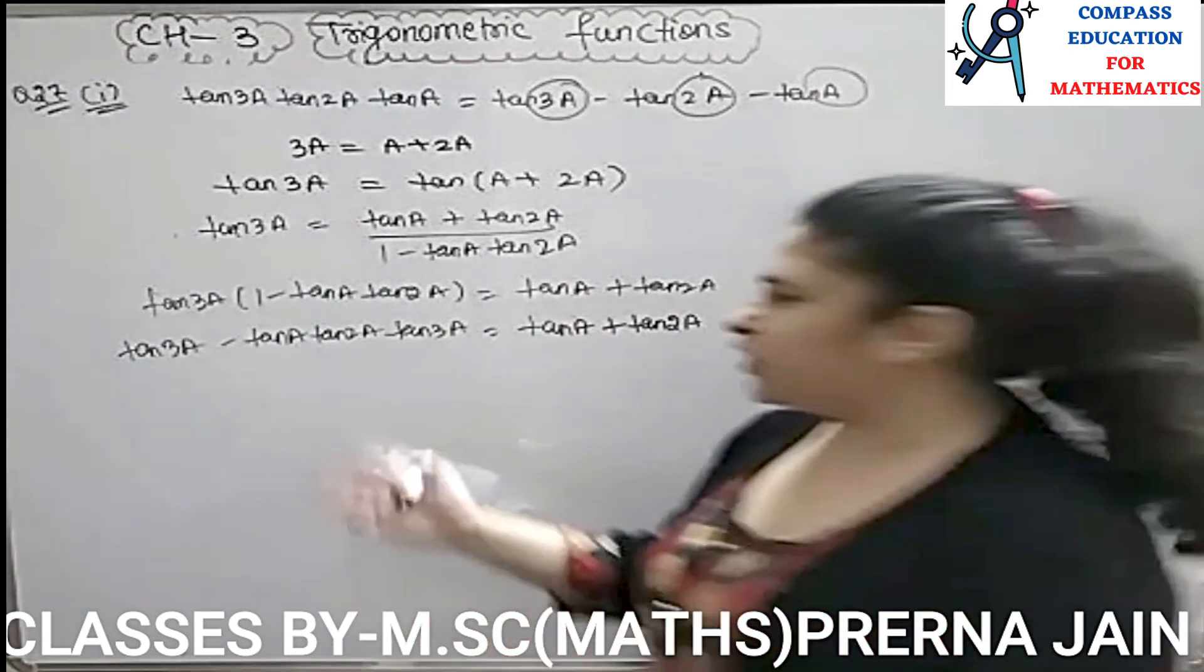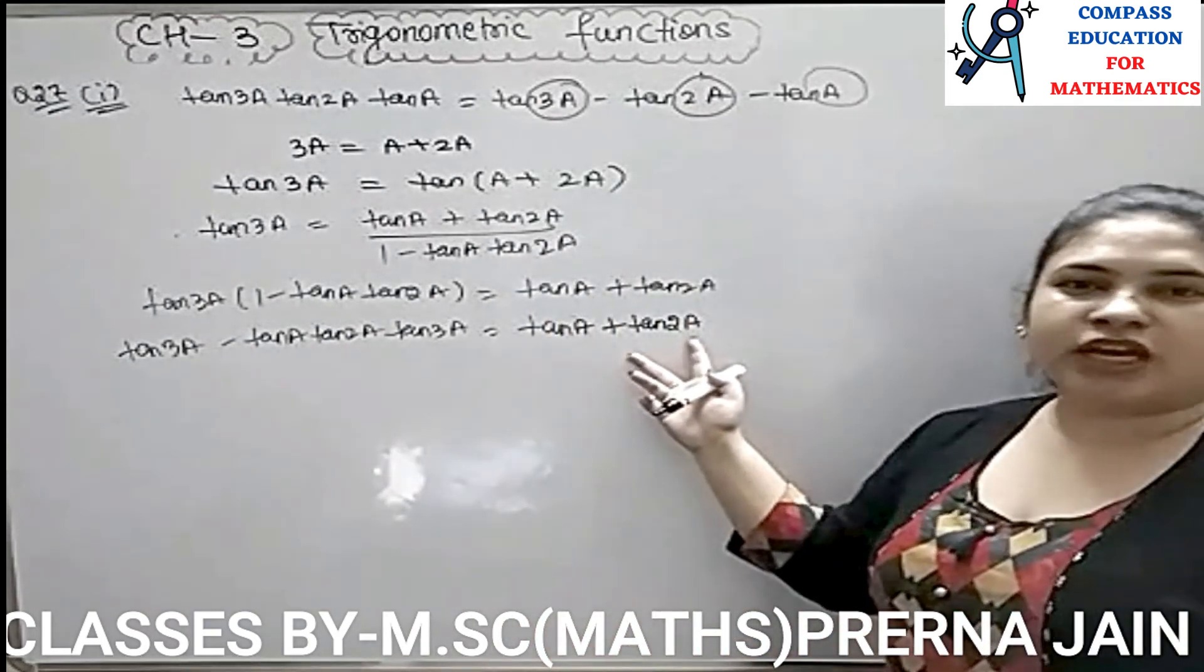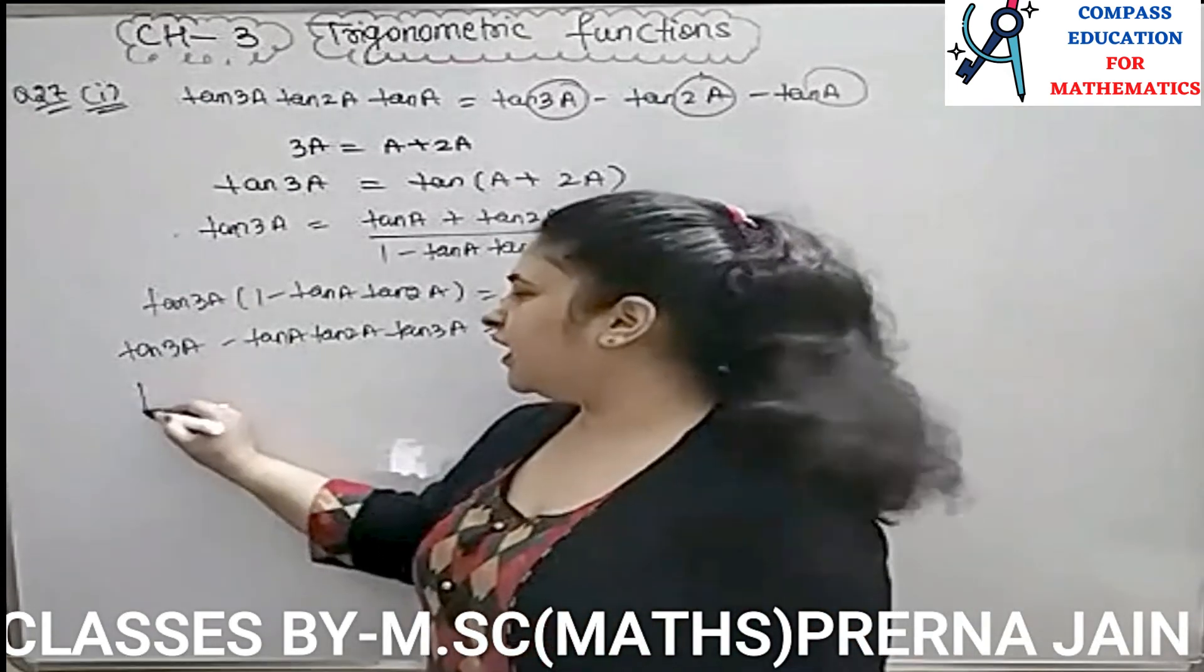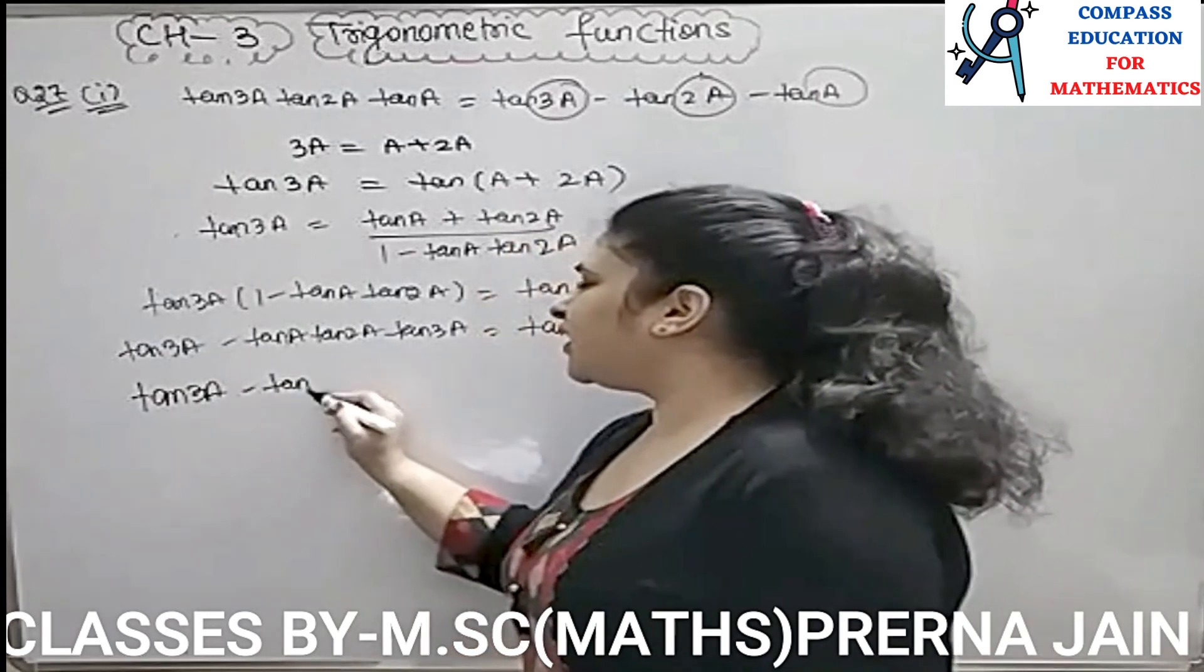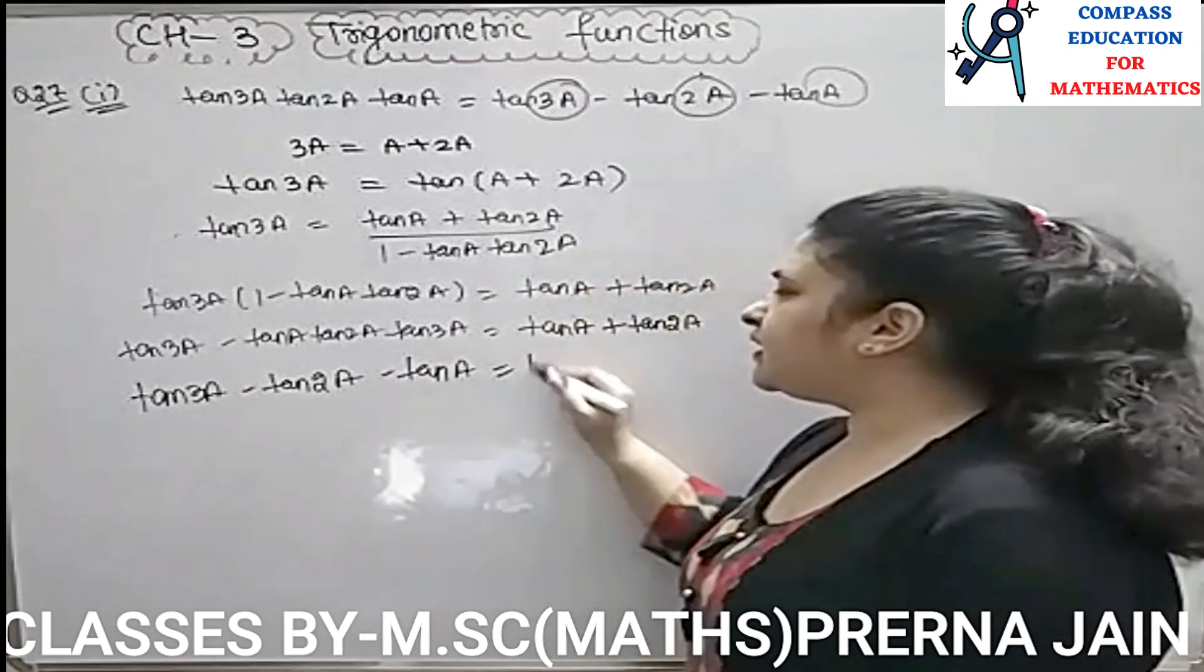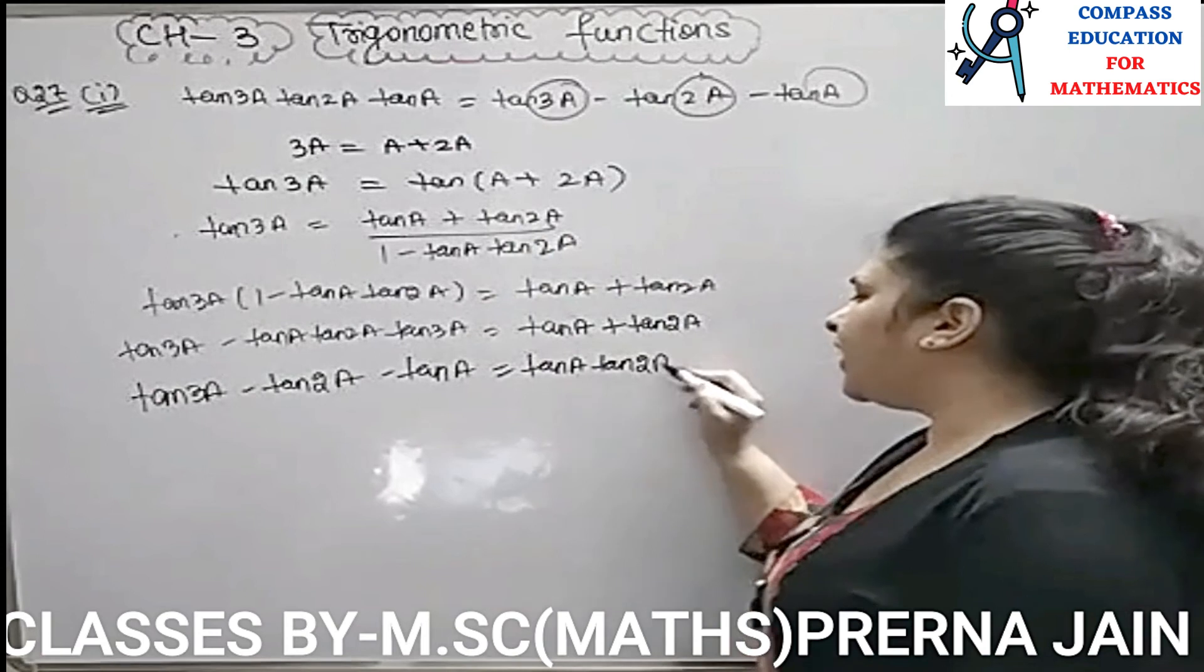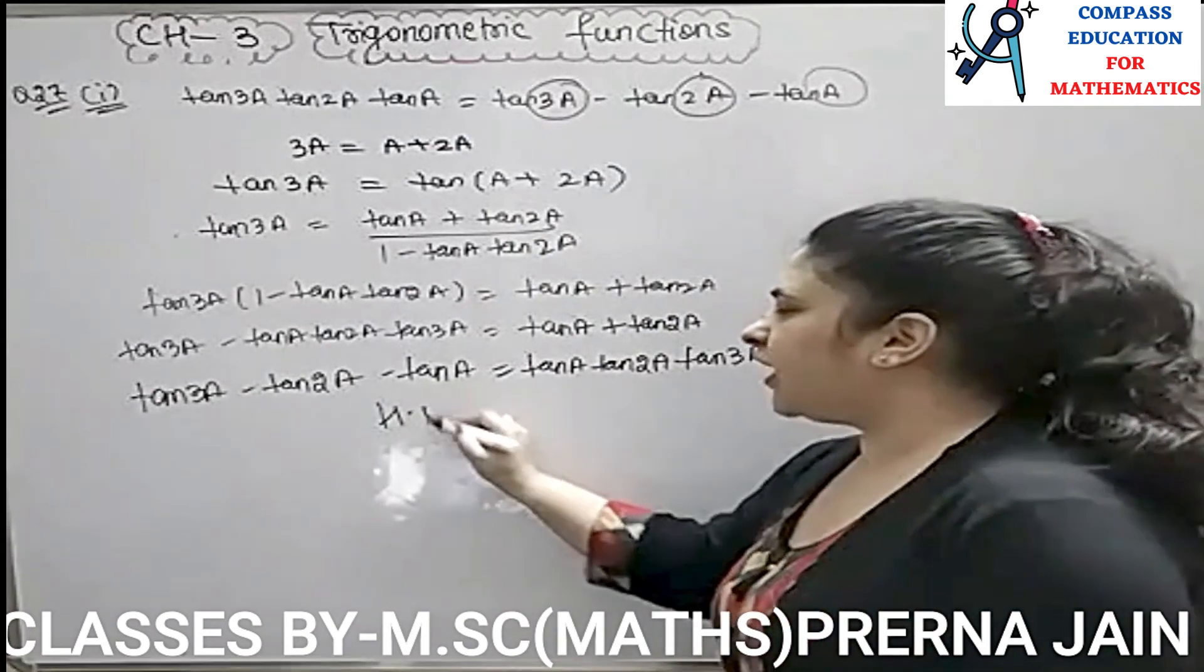Now, simple transposition. This is minus term. Equal to the other side, what will happen? Plus. These two are plus. Equal to the other side, what will happen? Minus. That is TAN 3A minus TAN 2A minus TAN A is equal to TAN A TAN 2A TAN 3A. Hence, proof. That is why I have to prove it.